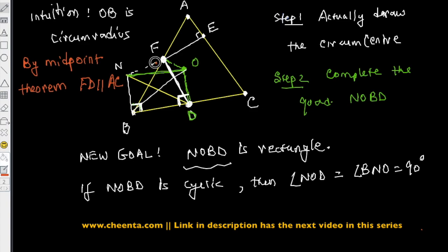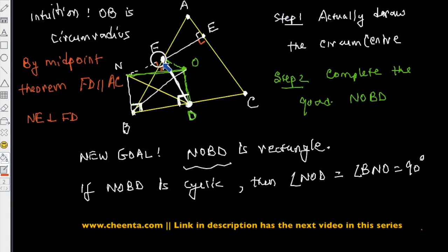Since FD is parallel to AC, and NE is perpendicular to AC, therefore NE must also be perpendicular to FD — meaning this angle is 90 degrees. Since this angle at B is also 90 degrees by construction, therefore quadrilateral NFDB is cyclic, because opposite angles add up to 180 degrees.